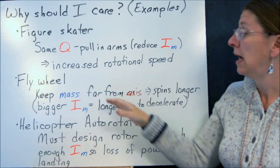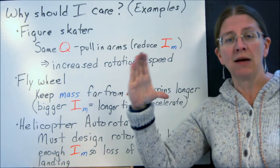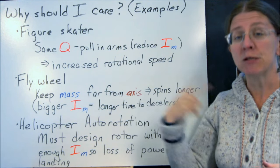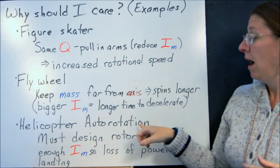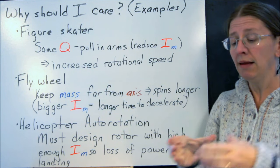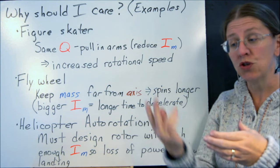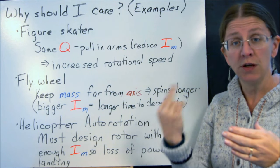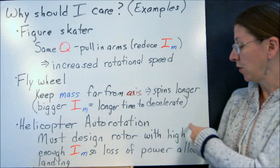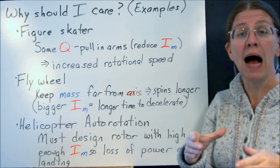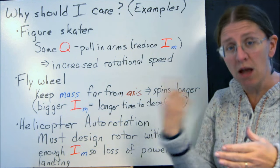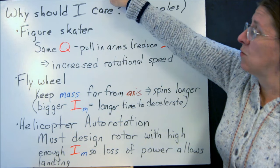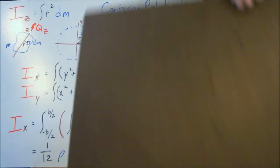A flywheel works the same kind of way. You want to keep all of the mass on the outside, where r squared is very large. And at that point, it spins and it keeps spinning. A helicopter auto-rotation is another wonderful one. A helicopter, if it loses power, will start to decelerate the rotor. But while it's still going around, it's still making lift. So what you want to do is have your rotor mass moment of inertia be high enough so that it spins long enough for you to get to the ground without killing yourself. So those are three places where mass moment of inertia comes up.